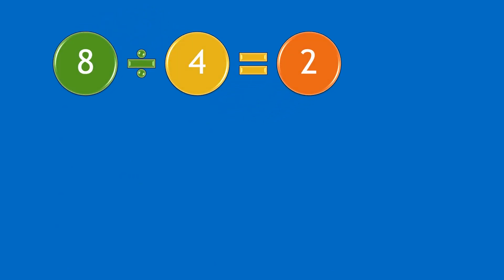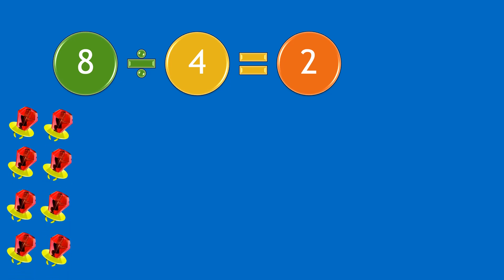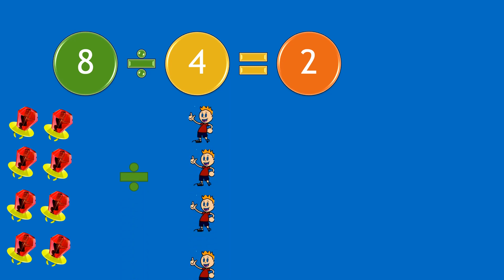Moving on to our next question: eight divided by four equals two. So if you have eight ring pops and divide them by four boys, each boy will receive two ring pops.